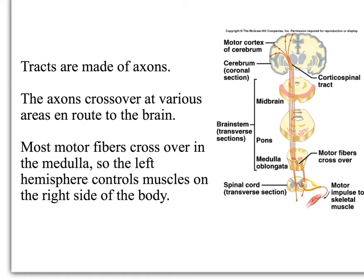Tracts are made of axons. The axons cross over at various areas en route to the brain or coming from the brain — some cross over in the brain stem, some in the spinal cord. Most motor fibers, the ones that control our muscles, cross over in the medulla oblongata. So the left hemisphere controls muscles on the right side of the body, and vice versa.